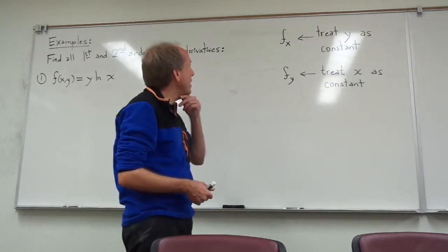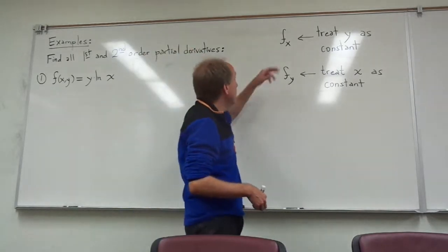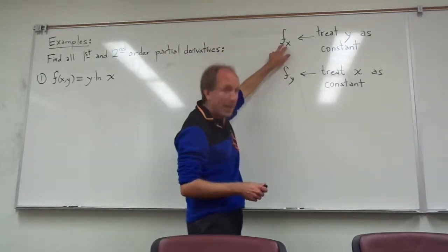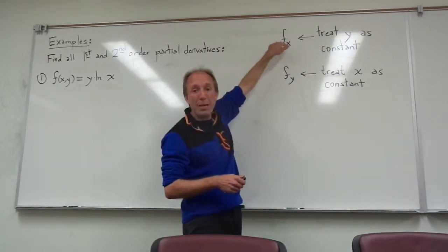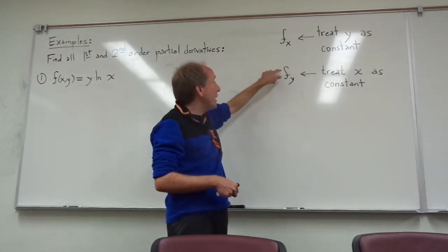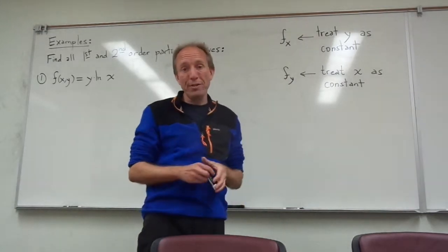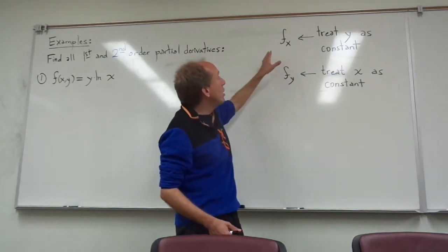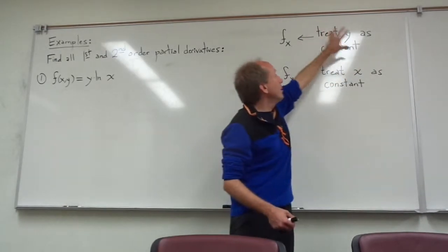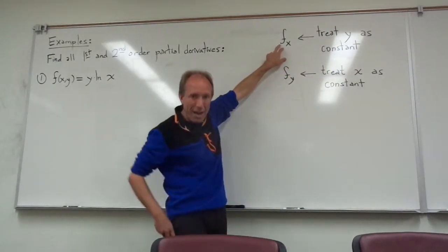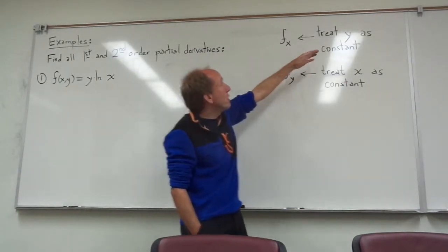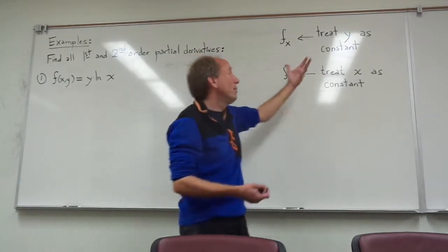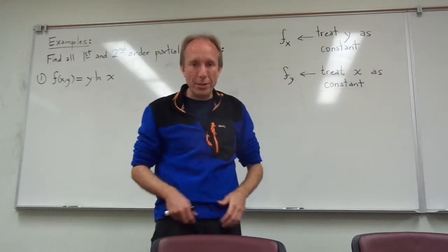Remember that if you have a function of two variables, x and y, then you have two different partial derivatives that you can calculate. We can calculate f sub x, the partial derivative of f with respect to x, and we can also calculate f sub y, the partial derivative of f with respect to y. When you're calculating a partial derivative, you're going to be treating the other variables as constant. So if I'm calculating the partial with respect to x, I treat y as a constant, and similarly for the partial with respect to y, I treat x as a constant.